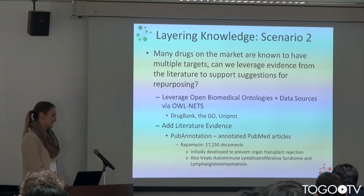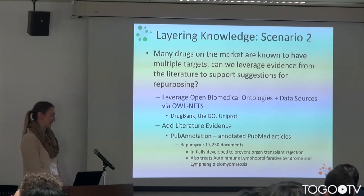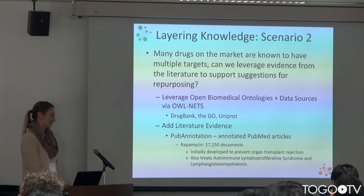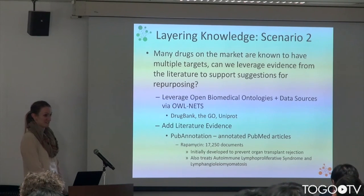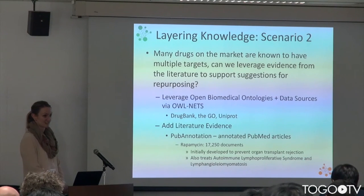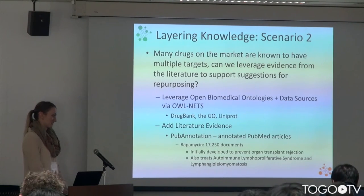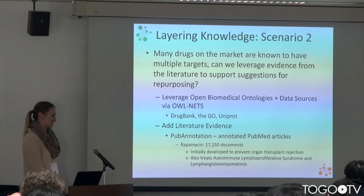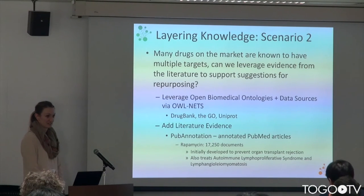One drug that's well known for its different uses is rapamycin. In PubAnnotation, there are 17,250 documents that discuss rapamycin. This was a drug that was initially developed to prevent organ transplant rejection, but has since had many other different uses.